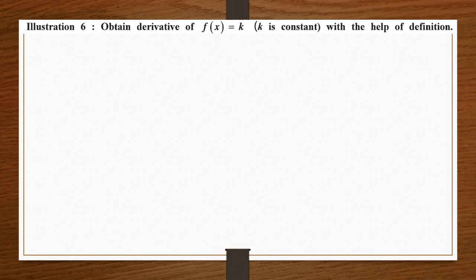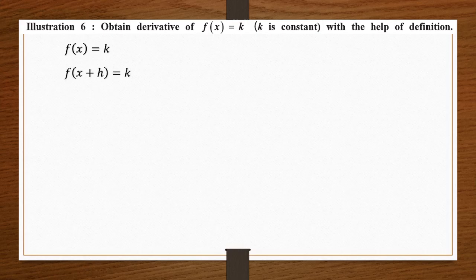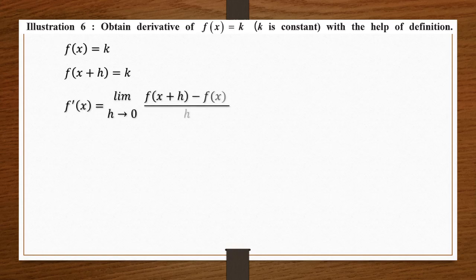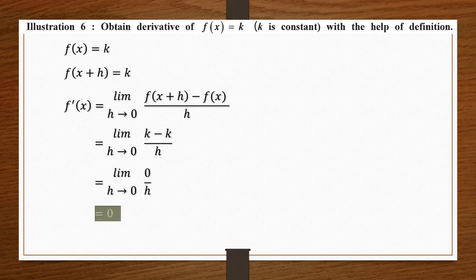Illustration 6: f(x) = k, where k is a constant with no relationship to x. Since there is no x, we cannot replace it with x+h, so f(x+h) = k as well. Substituting into the definition equation, we get (k − k) upon h = 0 upon h = 0. So whenever we have a constant in the question, its derivative is directly 0.